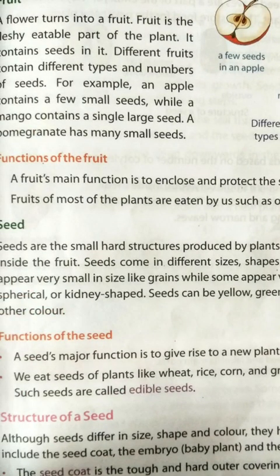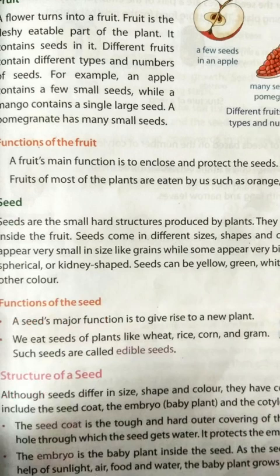A flower turns into a fruit. Fruit is the fleshy, eatable, juicy part of the plant. It contains seeds in it. Different types of fruit have different types of seeds.